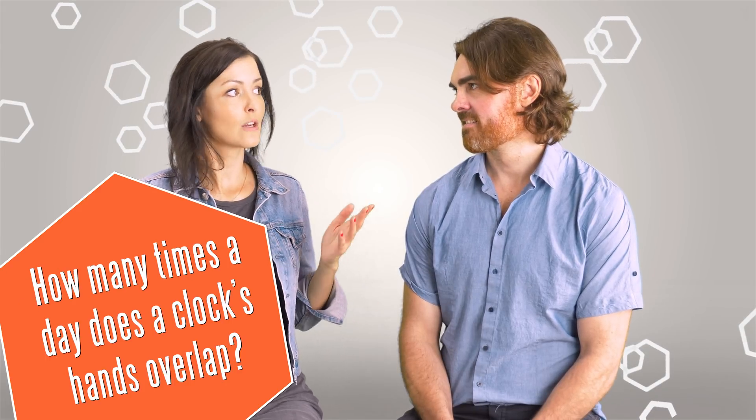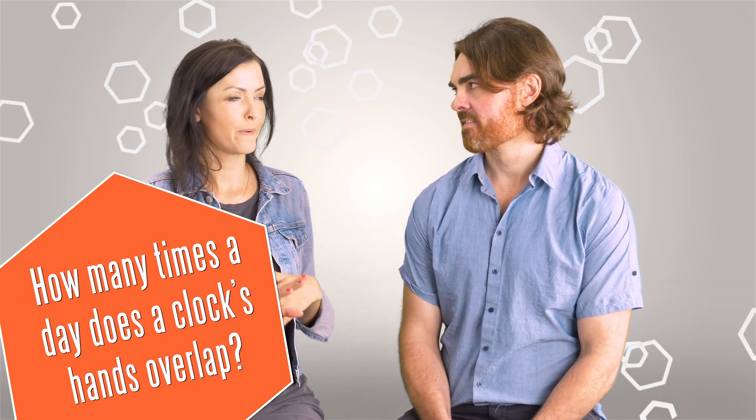How many times a day does a clock's hands overlap? Oh. 12? 11? Probably, is it 23? That's really close. Yeah, 24? No. Not quite. 23? Not quite. But you're on the right track. Is it 22? Mm-hmm. Okay.